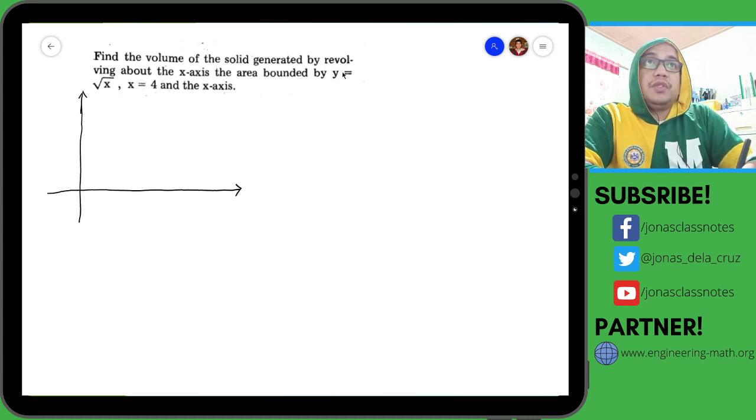The function y equals square root of x. This is actually a parabola that opens to the right, but since there's a square root it's only a half parabola. So this is y equals square root of x, and then we are bounded until x equals 4.